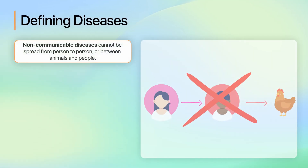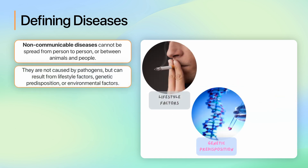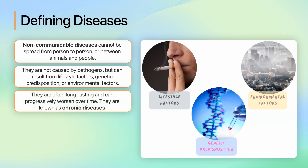Non-communicable diseases cannot be spread from person to person or between animals and people. These diseases are not caused by pathogens, but can result from lifestyle factors, genetic predisposition or environmental factors. Non-communicable diseases are often long lasting and may progressively worsen over time. They are known as chronic diseases.